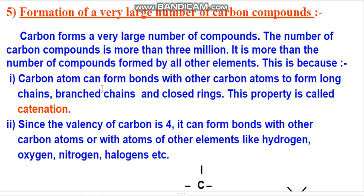Carbon atoms form a long chain, or branch chain, or closed ring under the carbon bond. So this catenation is done — scatenation.